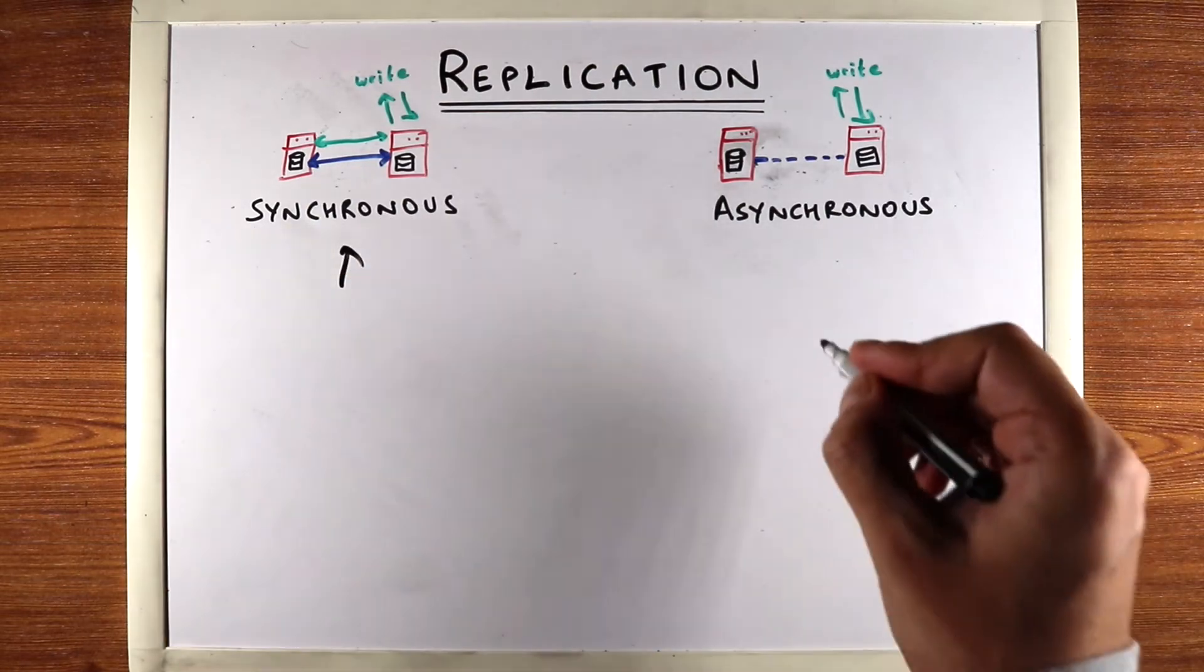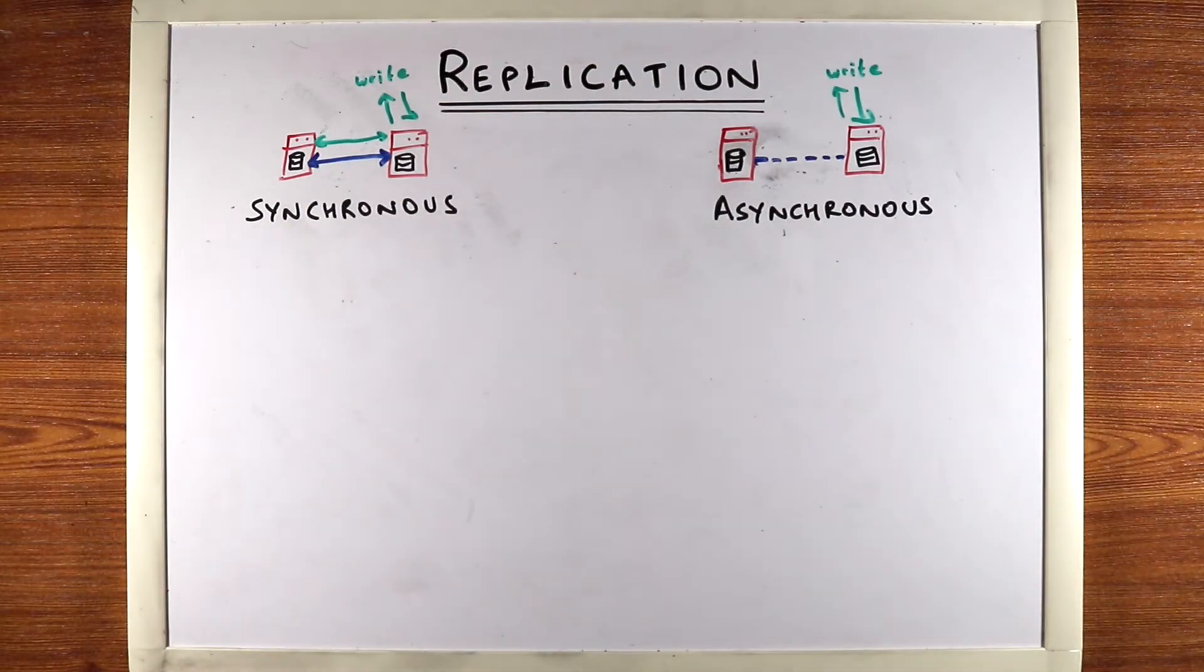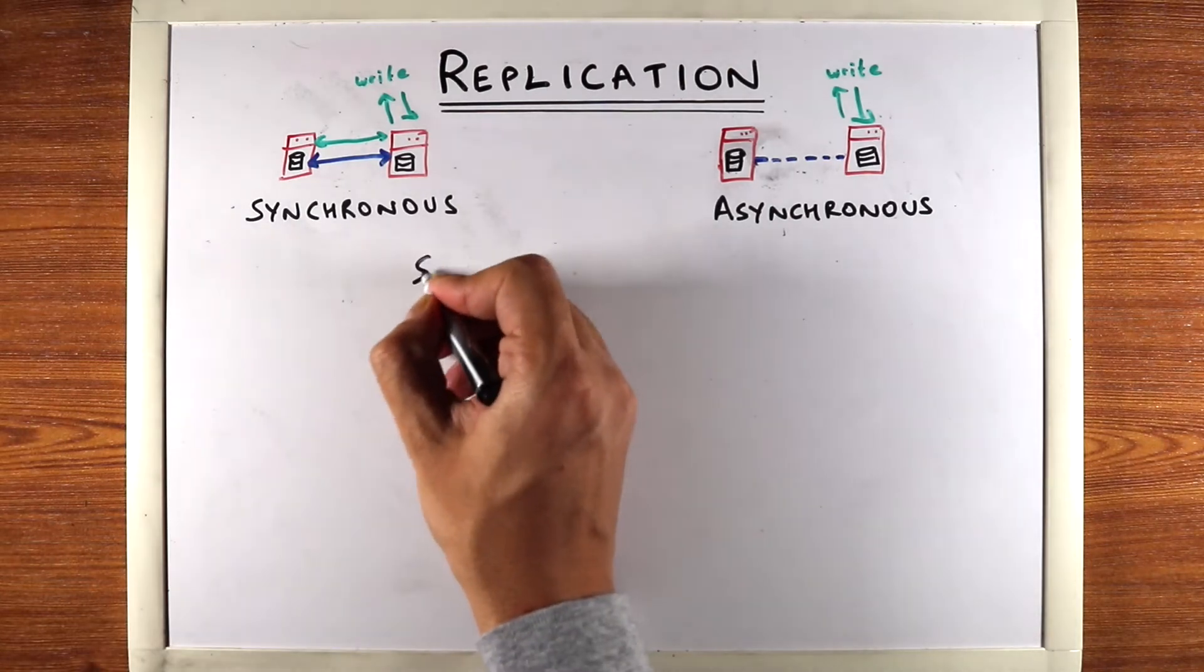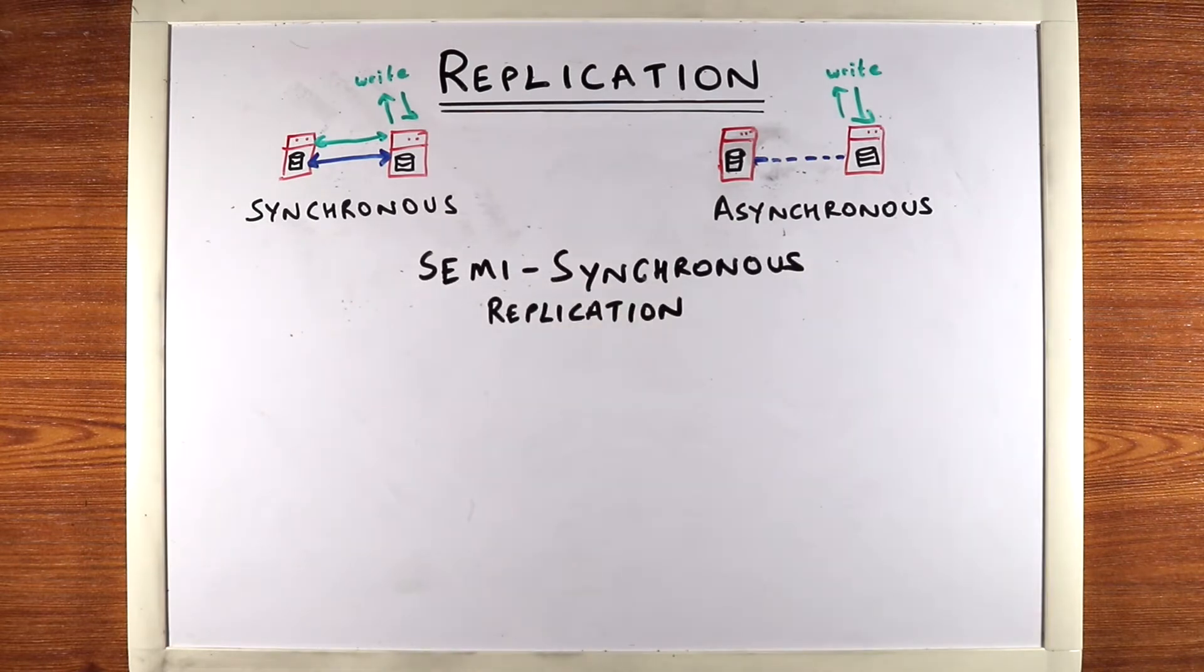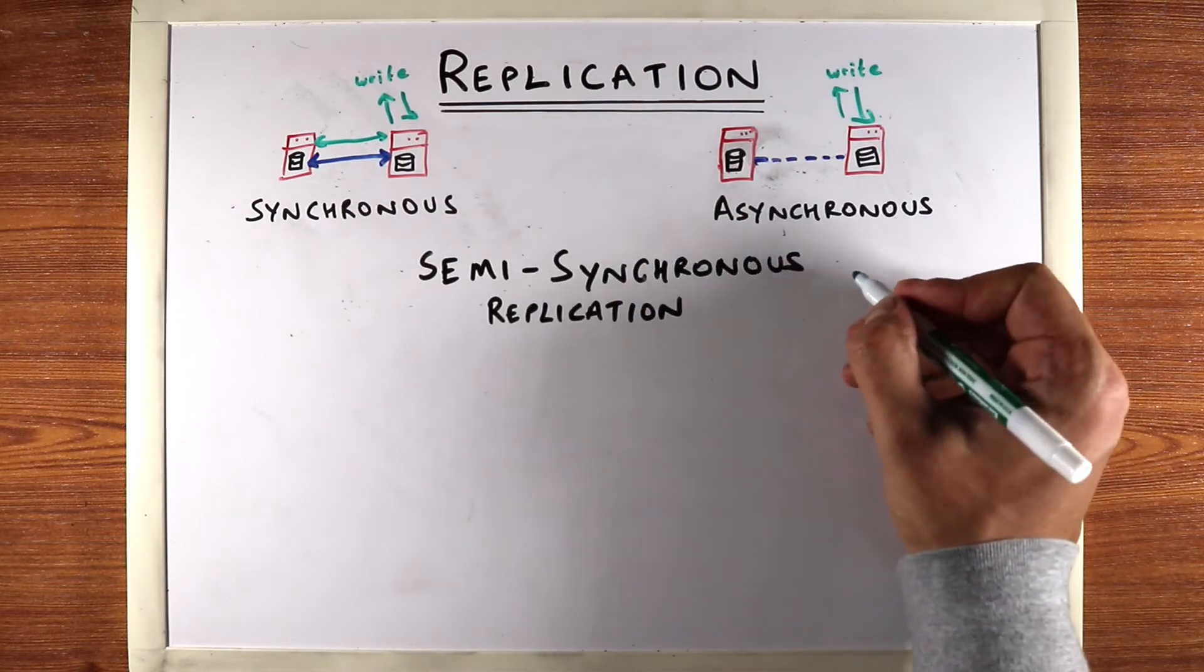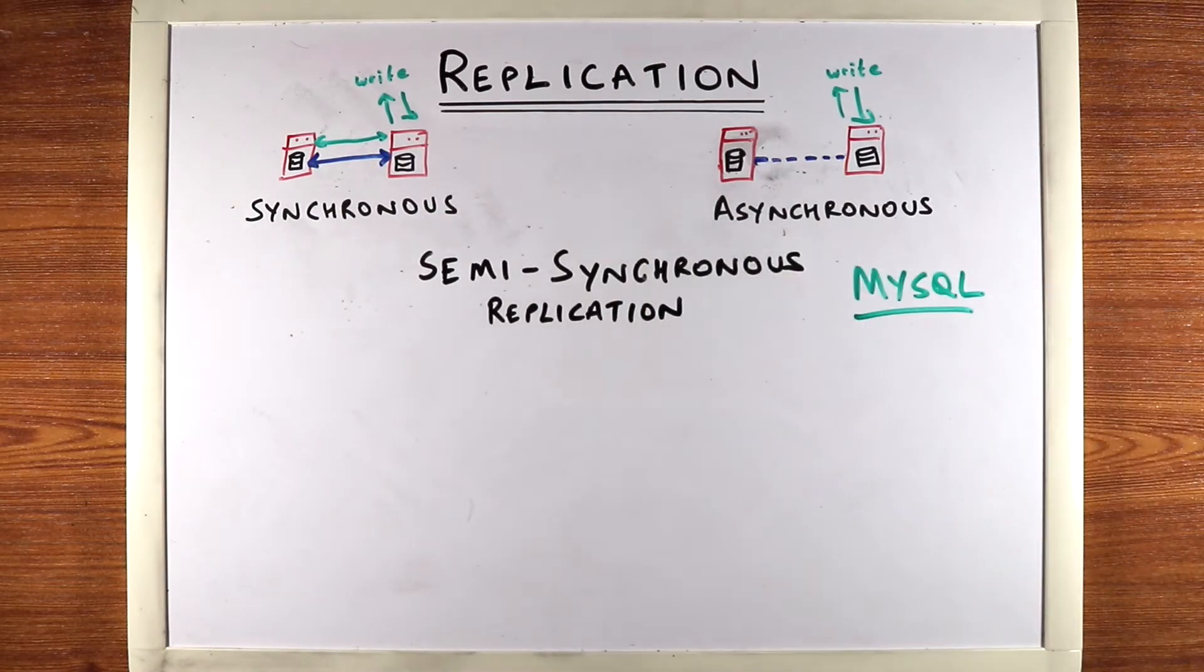We've seen synchronous replication and asynchronous replication, and those two seem like two extremes. But a lot of times you can actually create hybrid configurations, which I'm going to call semi-synchronous replication. Now, semi-synchronous is not an industry standard word—in fact, it's used primarily by MySQL as far as I could find. But different databases have different terms for this.